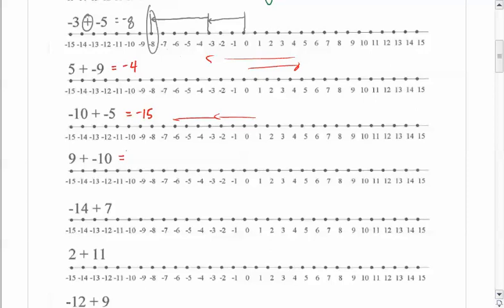So I'm going to go to negative 10 and then I'm going to back up only 9. There's me going to negative 10, and I'm going to back up only 9 spaces, and I'm going to land at negative 1. So the answer to 9 plus negative 10 is negative 1.